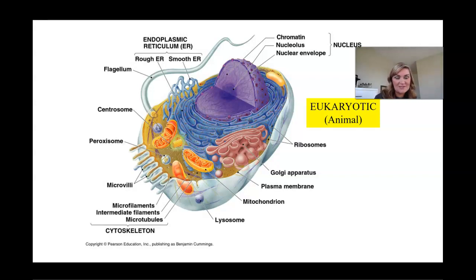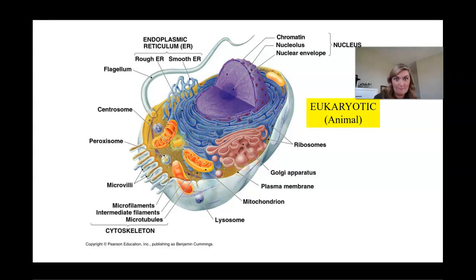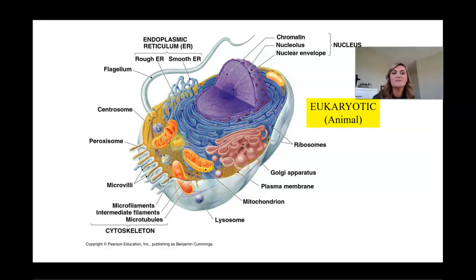The nucleus contains chromatin, which is your DNA in its natural form when it's not going through mitosis and condensed into chromosomes. It has a nucleolus responsible for making ribosomes, and it's contained in a nuclear envelope that regulates what goes in and out, just like the cell membrane. You also have the endoplasmic reticulum, often abbreviated as the ER. Rough ER helps with making and producing proteins. Smooth ER has functions including lipid creation, cholesterols, and detoxifying things.